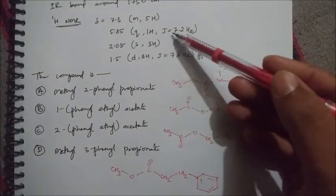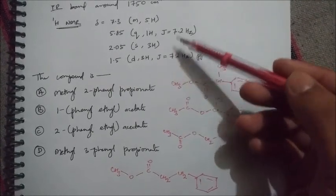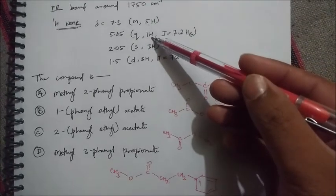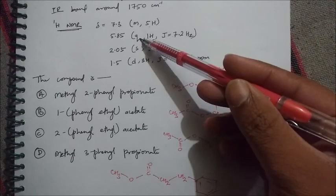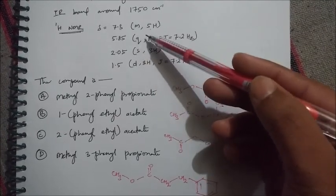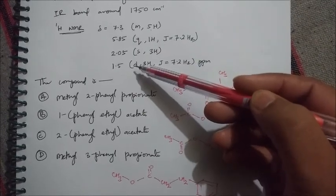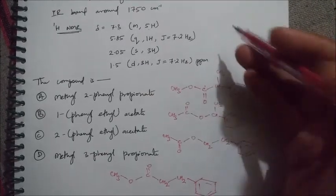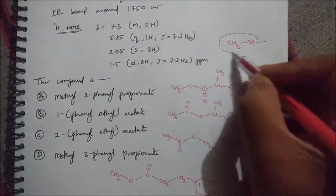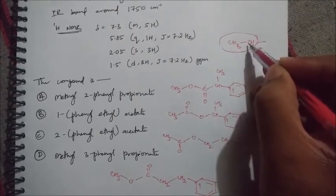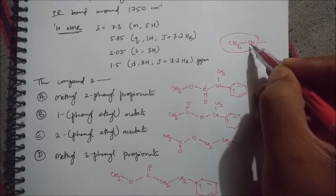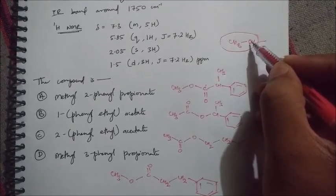Next, we check the coupling constant values. These two coupling constant values are the same, meaning these two protons are coupled with each other. One signal is a quartet (1H) and the other is a doublet (3H). The quartet arises because that proton is adjacent to a carbon bearing three hydrogens. The doublet arises because those three protons are adjacent to only one proton. So we can conclude there is a CH3-CH group present in the compound.